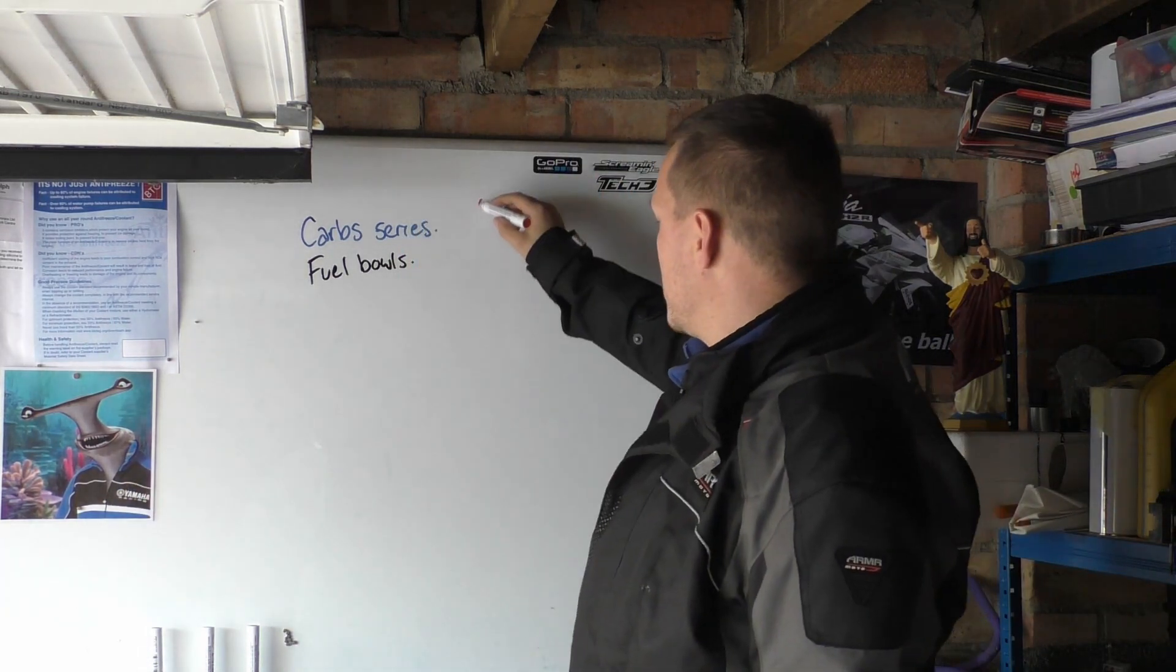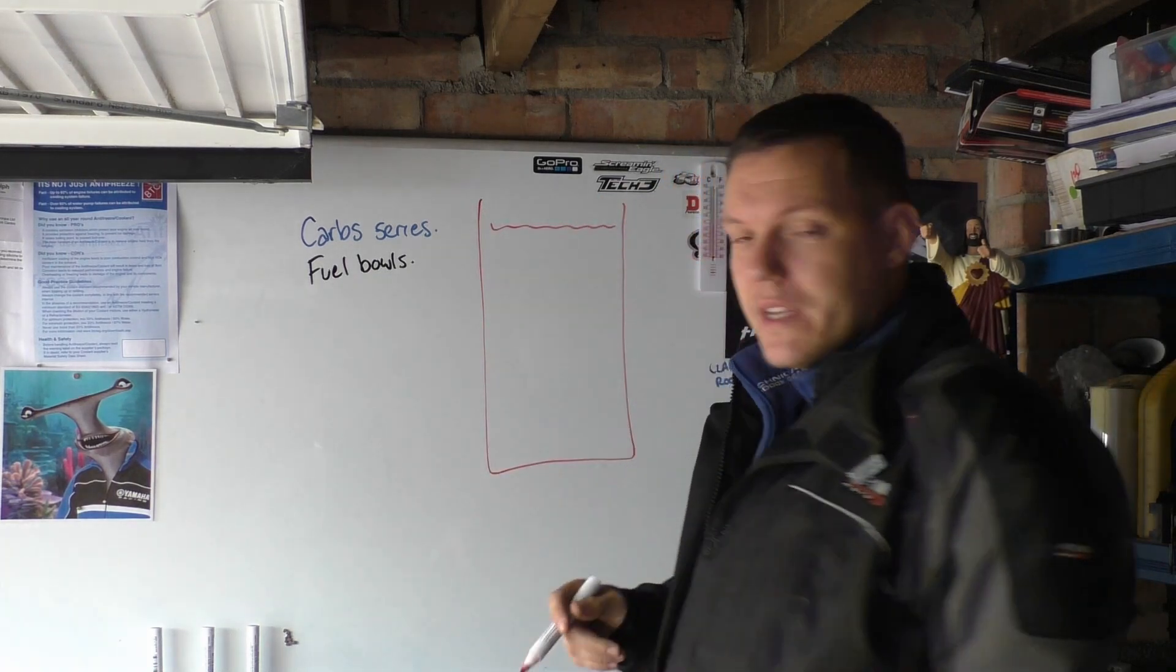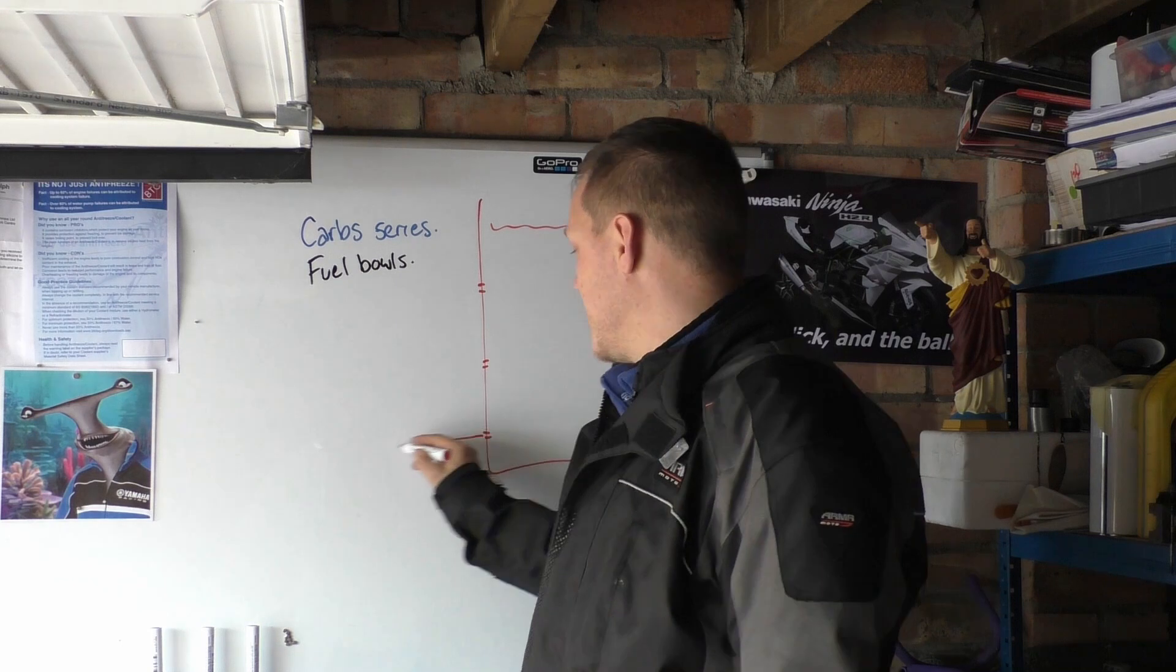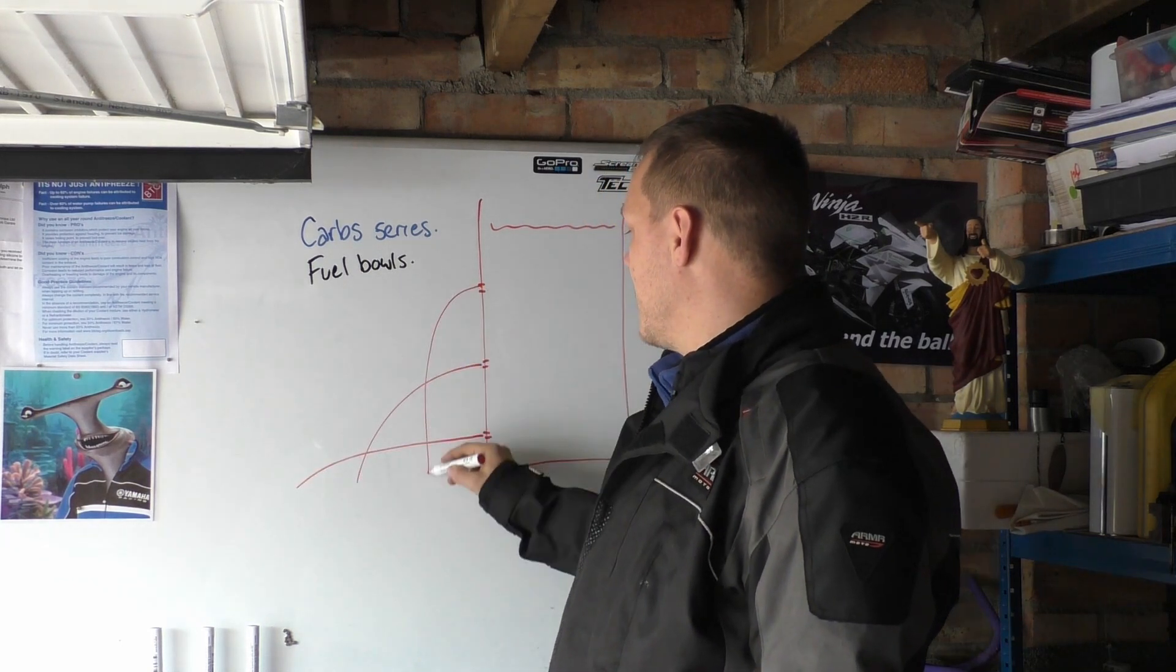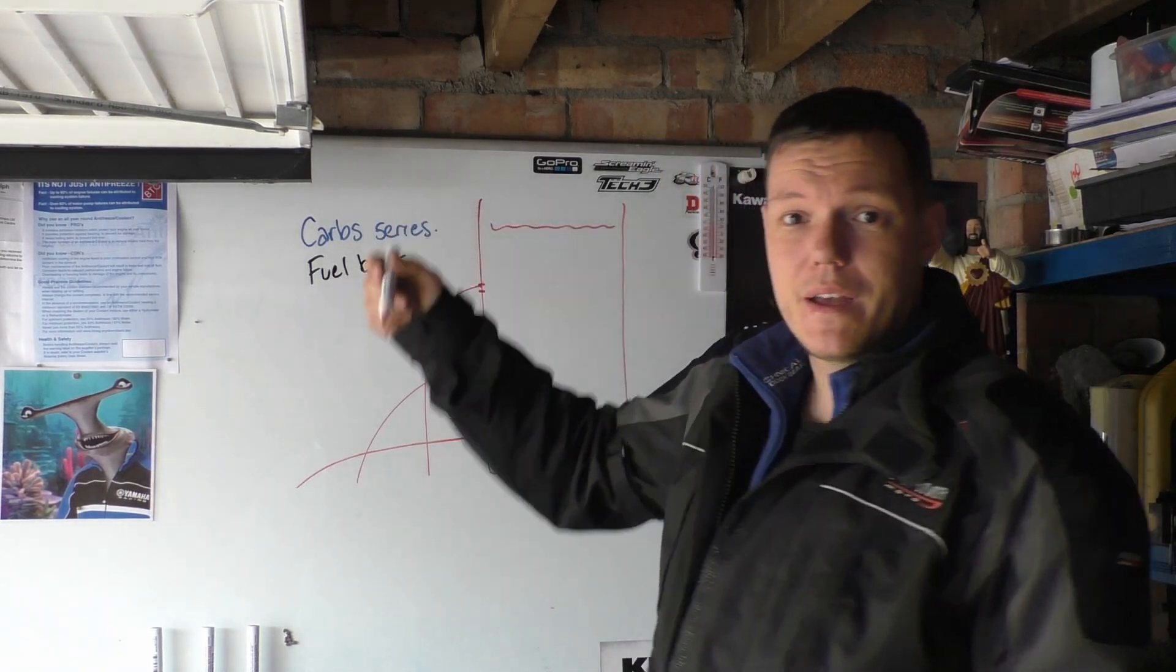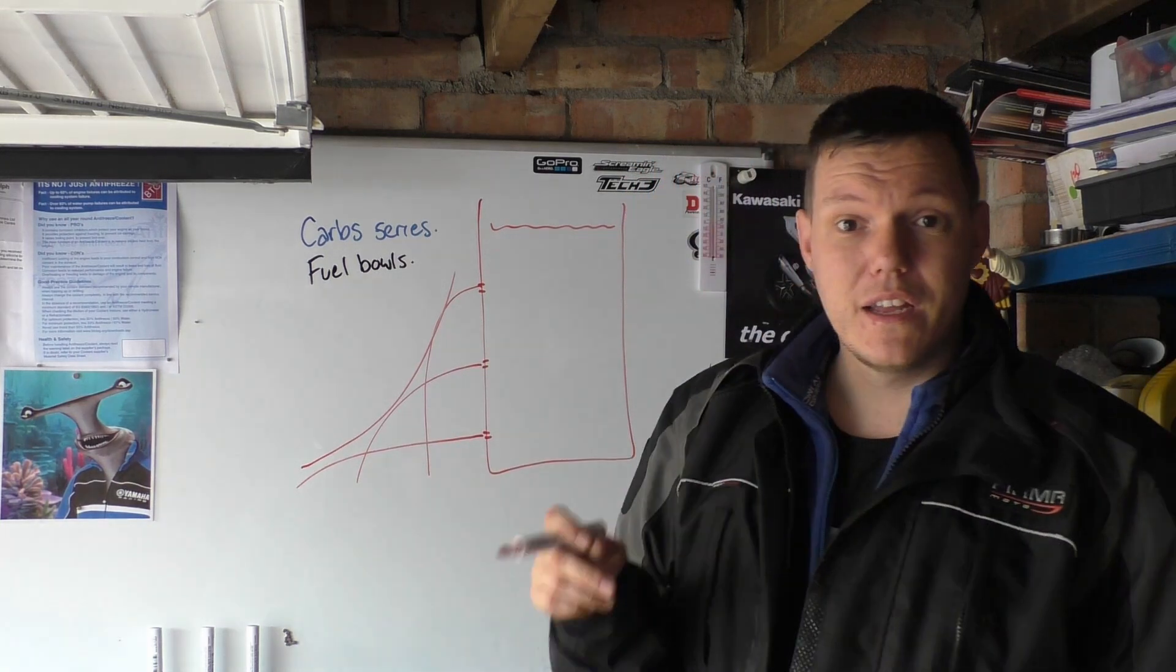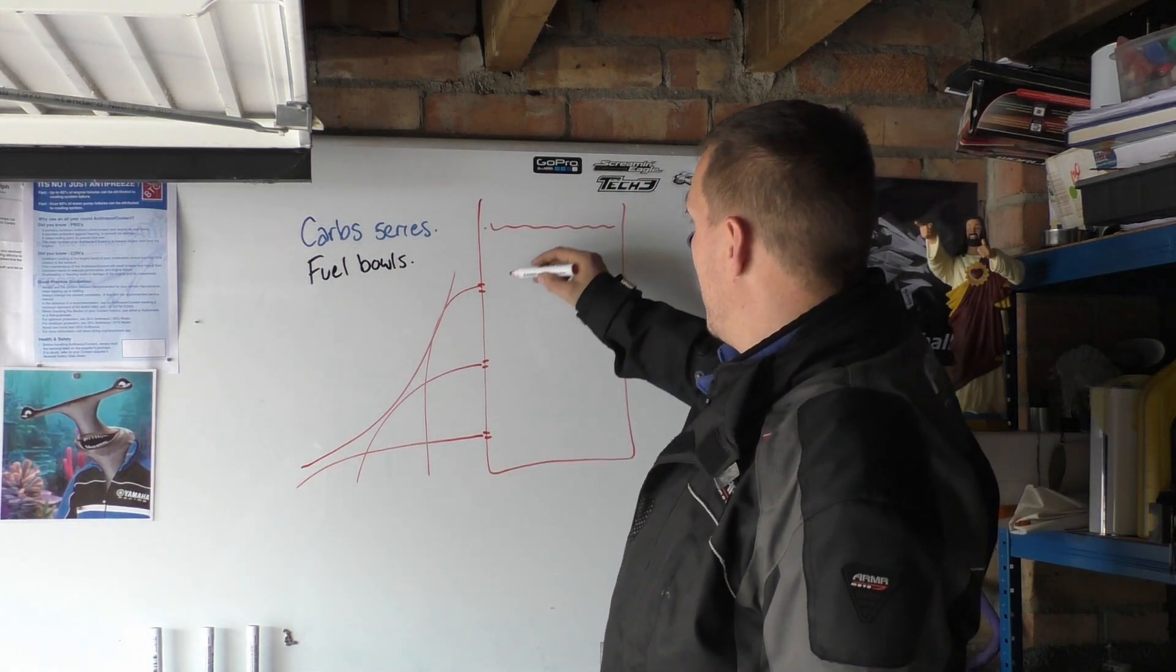We all know, we all did it at school: if you have a container like this full of a fluid and you have a hole here and a hole here and a hole here, this one will piss out like this, this one will piss out like this, and this one will piss out like this. Why is that? It's not because there's more gravity up here or anything stupid like that. It's because of hydrostatic pressure, the weight of all this water at all these different levels.